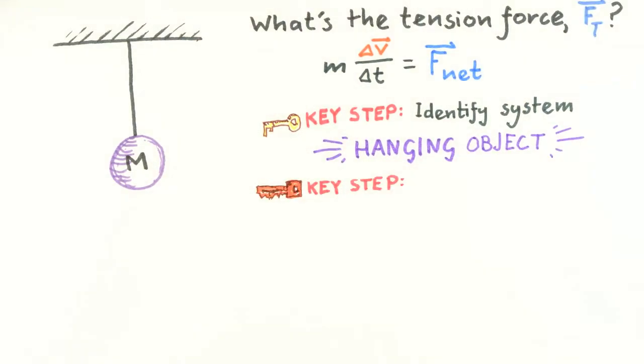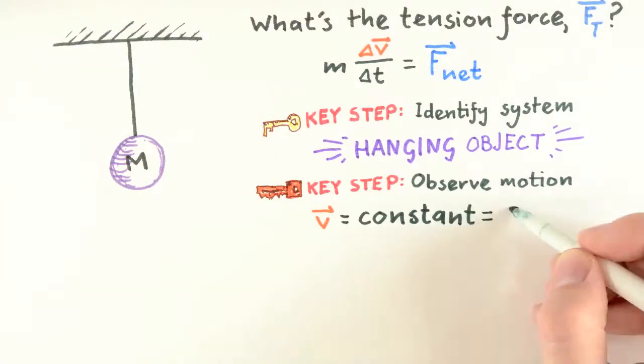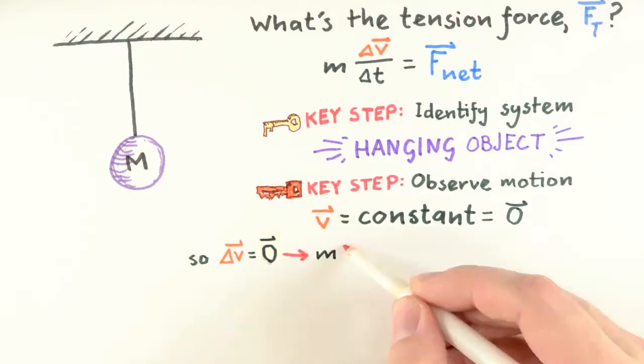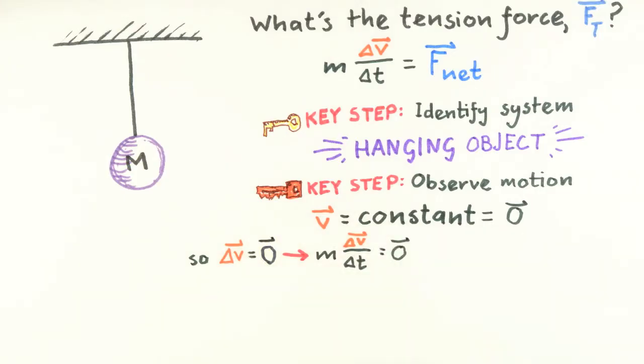In this case, we observe the object starts with zero velocity and, as time passes, the velocity remains unchanged. From this, we immediately can say that delta v is zero. So, by just watching the system motion, we determine the left-hand side of Newton's second law is zero. And so, by Newton's second law, the right-hand side, F net, must also be zero. It's precisely here in this step where we connect observations of the motion to say something about the forces, most directly the net force.